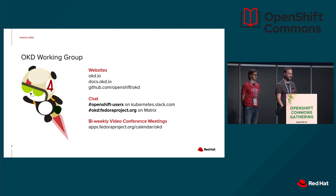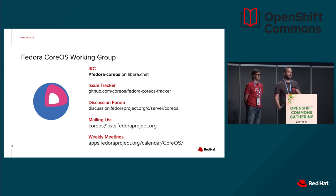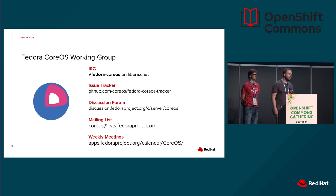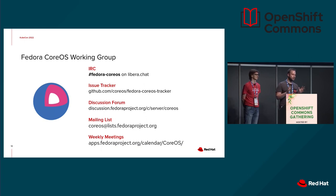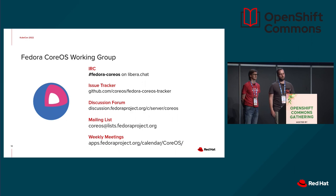If you want to join us, please go ahead and reach out. I also want to plug the Fedora CoreOS working group if you're interested in core operating system work. We have a liaison from the CoreOS group in the OKD working group, just as we have a liaison from the machine config operator in the OKD working group. The Fedora CoreOS working group has their own weekly meetings on IRC. There's also the Fedora CoreOS tracker — if you hit any issues with the base operating system, Afterburn, or any of the base OS tools, that's the right tracker to file things or track development. There's also a discussion forum on the Fedora forums and a mailing list.